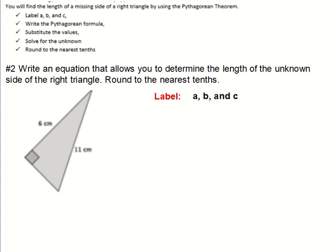We have our right angle is over here. So the side opposite that angle is C, the hypotenuse. And then the other two sides are the legs. So I'm going to label them A and B.